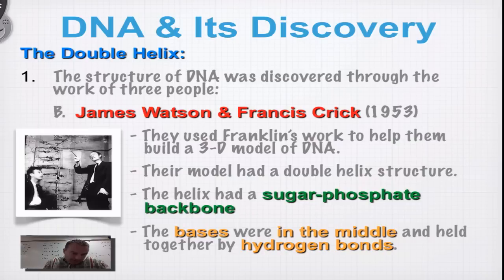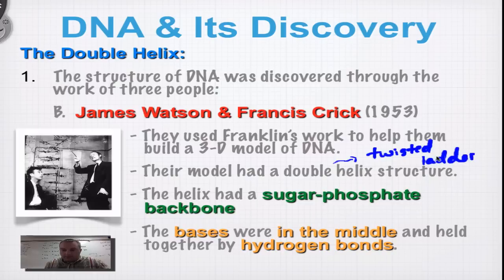They used Franklin's work to come up with their three-dimensional model. And in fact, this is a picture of the model that they created in 1953. Double helix. Now, I want you to remember, double helix means, in plain English, twisted ladder. And the double part refers to two strands. We'll talk about that in just a little bit.